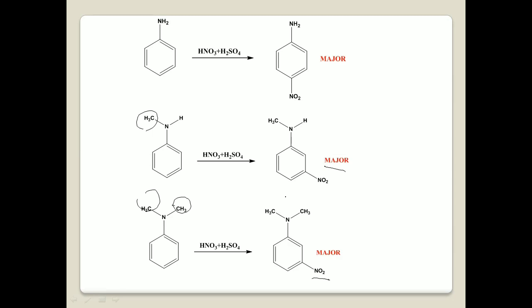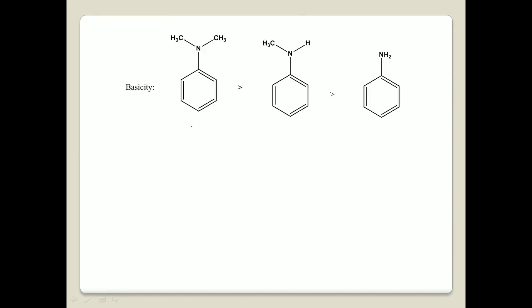Why is the meta product formed as the major product? It is explained on the basis of basicity. N,N-dimethylaniline is more basic than N-methylaniline, and it is more basic than aniline. Because methyl groups are positive inductive (+I) groups, they increase the basic nature. So N,N-dimethylaniline is the most basic compound.